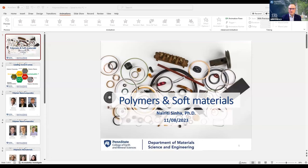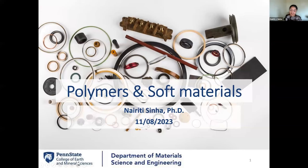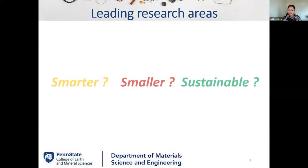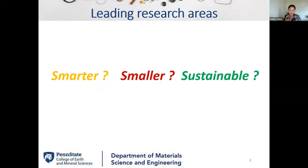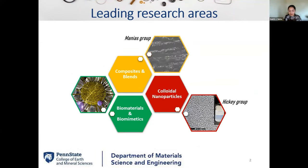I'm going to give a quick overview of polymers and soft materials. At Penn State's material science and engineering department, a lot of research is done with polymeric soft materials. The general ideas are how to make polymers of the next generation smarter, smaller, and more sustainable. It spans many different types of materials — composites, blends, colloidal nanoparticles, biomaterials, and biomimetic polymers. The techniques used come down to the two P's and two C's of polymer research: processing, physics, characterization, and chemistry.